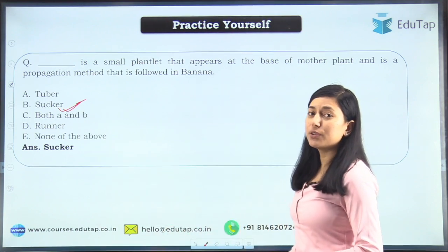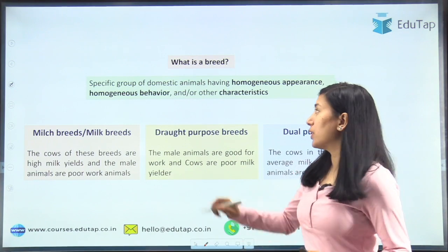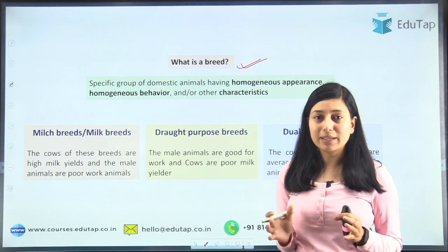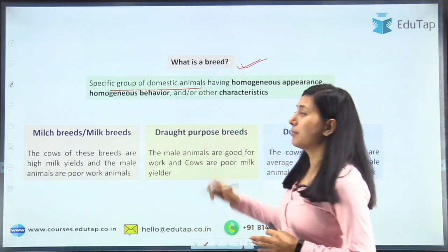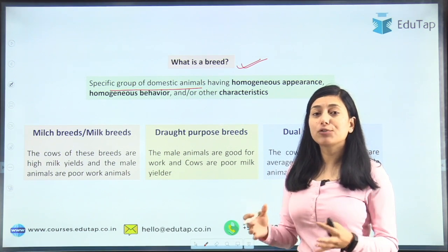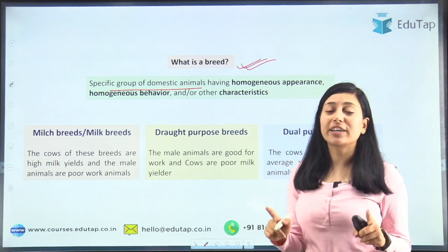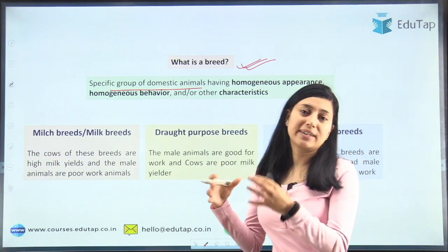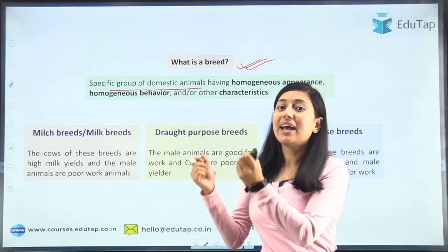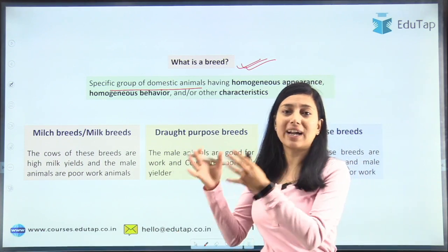Now let's move on to today's topic — important livestock breeds. Students, you must know what a breed is. Basically, a breed is a group of domestic animals that have homogeneous characteristics, and these characteristics differentiate them from other species.